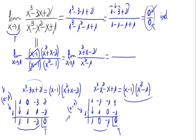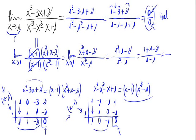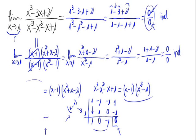Let's try again, substituting the 1 to see if we have a value that solves the limit. Substituting 1, we would have 1 squared plus 1 minus 2 divided by 1 squared minus 1, which equals 1 plus 1 minus 2 divided by 1 minus 1 — again 0 divided by 0. Indeterminate again; we have to go on simplifying the polynomials.